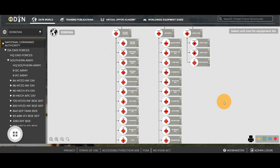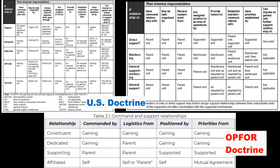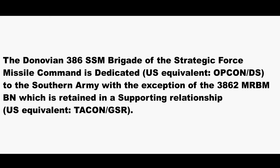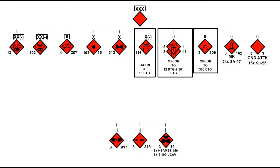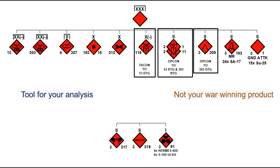The last topic we want to discuss is all of these lines linking units together. As an analyst, you must understand these lines convey the command relationship — or COMREL — between units. We will make a video specifically for this topic down the road, but in the meantime please understand and use the materials on the screen to educate yourself on terms of reference and their meaning, because we must understand what these words mean to know how the enemy fights. For example, the DeNovian 386th SSM Brigade of the Strategic Force Missile Command is dedicated — U.S. equivalent OPCON direct support — to the Southern Army, with the exception of the 3862nd Medium Range Ballistic Missile Battalion, which is retained in a supporting relationship, U.S. equivalent TACON General Support Reinforcing. These charts and their lines are the beginning of the story, but they are not the full story and were never meant to be. That is what you are paid for as an analyst. They are your tools, not your end state.